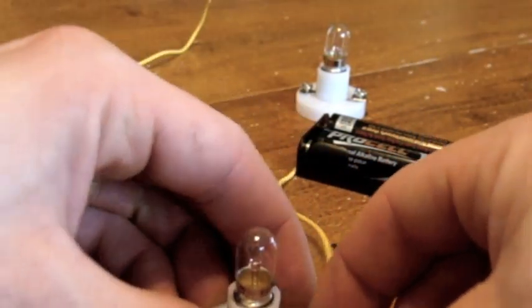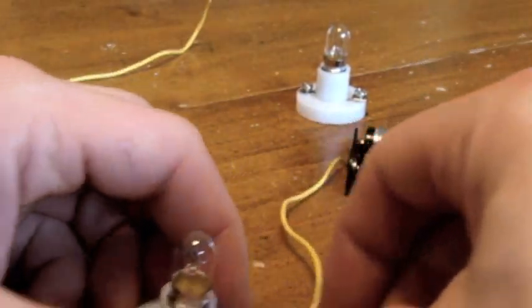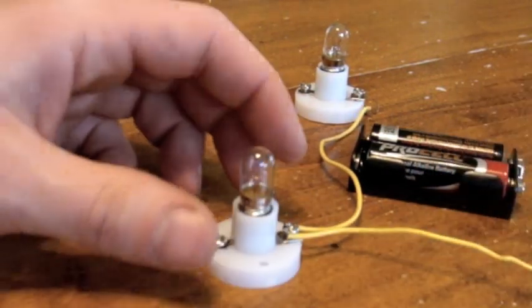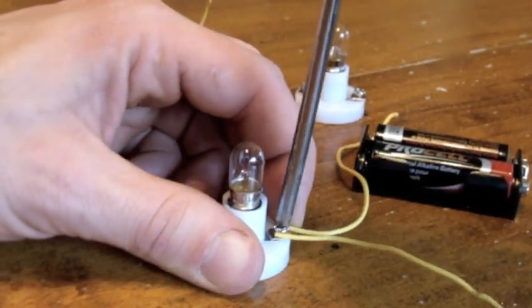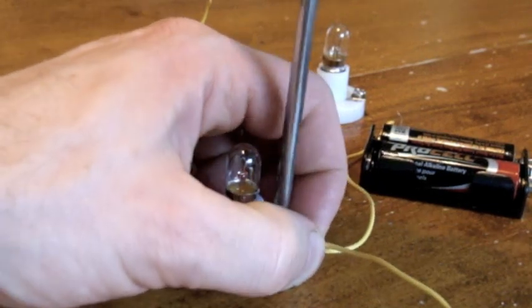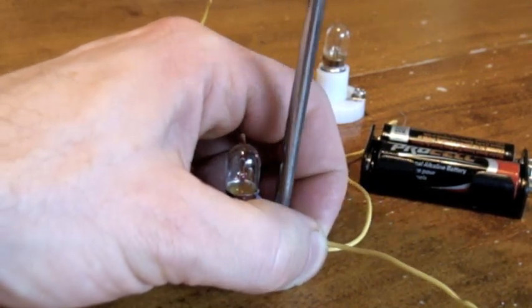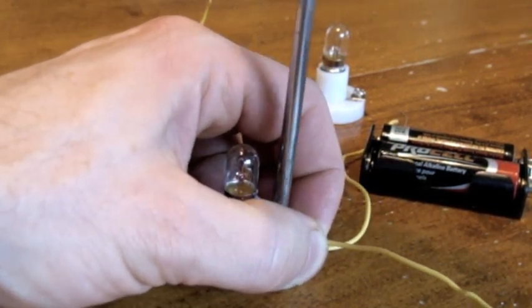I'm going to wrap that around the screw on one of the bulbs and then I'm going to tighten it down with my screwdriver. I'm also going to do that on the other side.